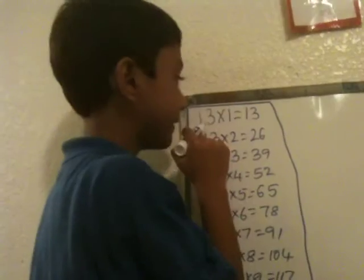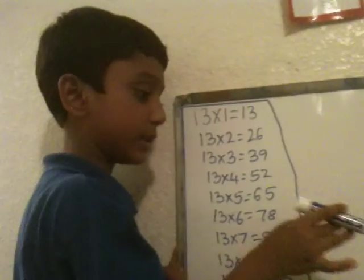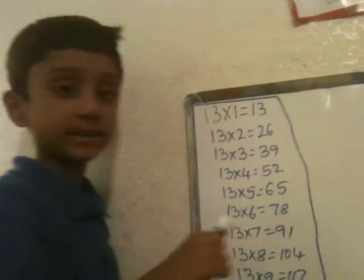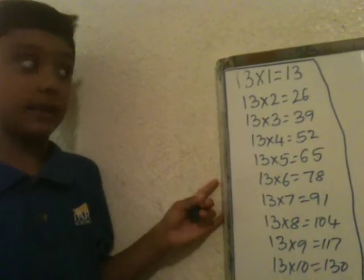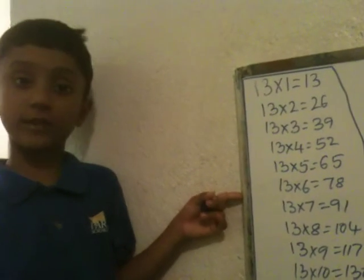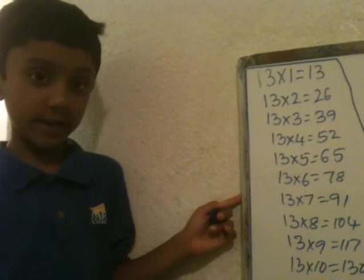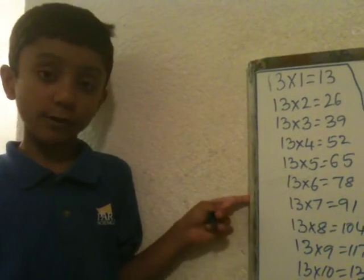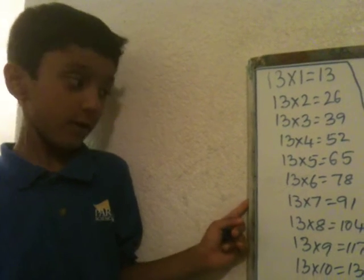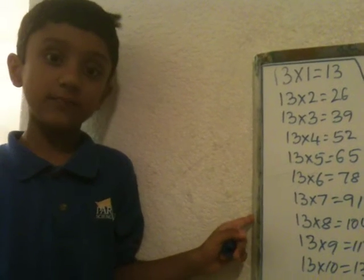So, then we'll say 13 ones are 13, 13 twos are 26, 13 threes are 39, 13 fours are 52, 13 fives are 65, 13 sixes are 78, 13 sevens are 91, 13 eights are 104, 13 nines are 117, 13 tens are 130. Okay.